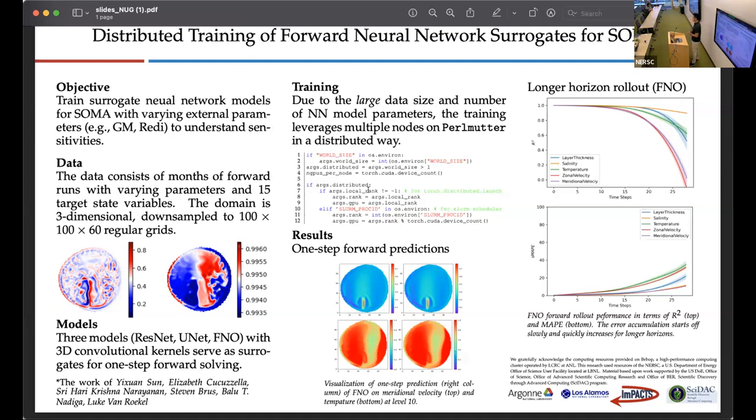Furthermore, we investigated the longer horizon rollout for all three models, and we found that Fourier Neural Operator performed the best. As you can see in the two metrics we evaluated for the longer horizon rollout, FNO can keep really high precision or very low error accumulation for the first 10 steps, but the error quickly accumulates or exponentially increases after around 15 steps.